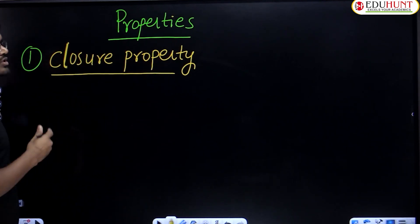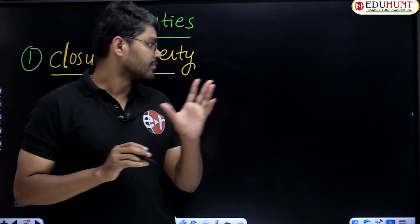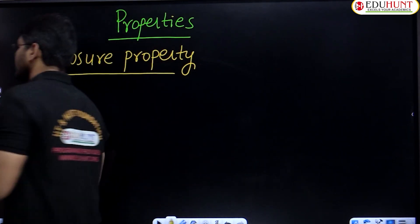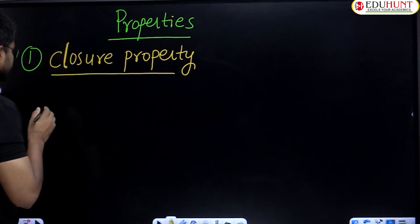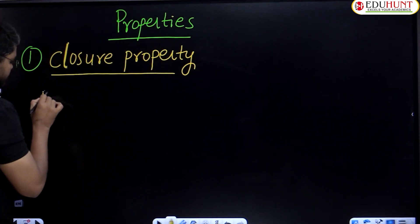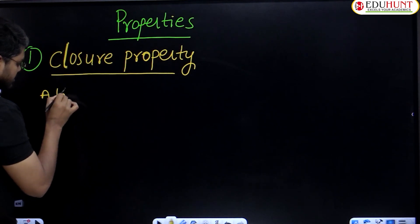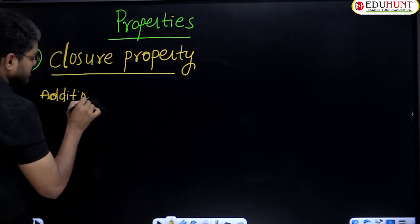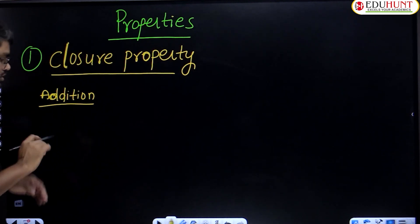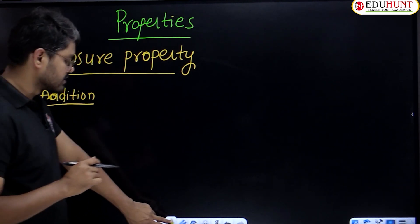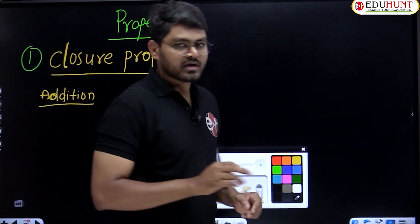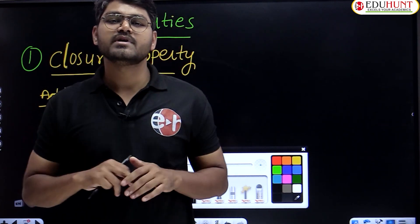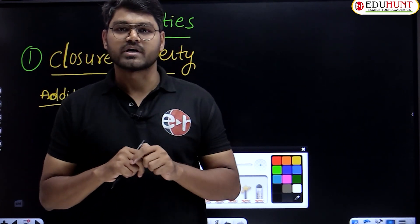The first property is closure property. Closure property in addition means the sum of two whole numbers must always be a whole number. That is closure property.